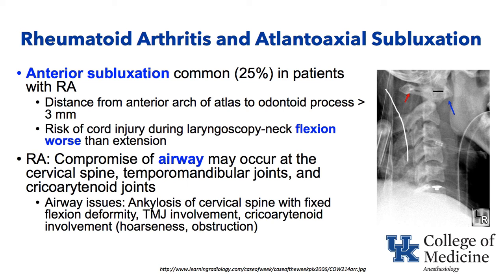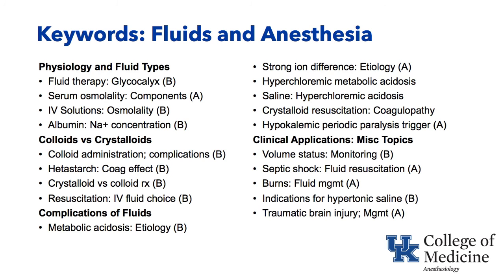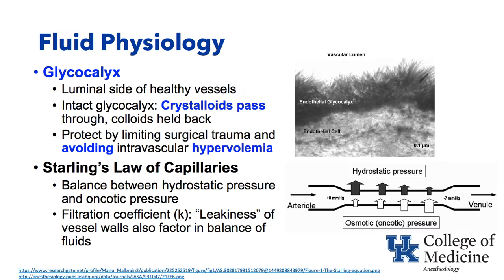Our next group of topics is fluids in anesthesia, broken down into physiology and fluid types, colloids versus crystalloids, complications of fluids, and clinical applications. First, fluid physiology and the importance of the glycocalyx — a protective layer between the vascular lumen and the endothelial cell. Crystalloids pass through it freely while colloids are held back if it's healthy. Limiting surgical trauma and avoiding intravascular hypervolemia helps keep the glycocalyx healthy.